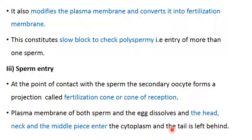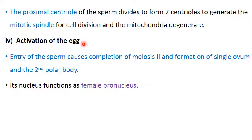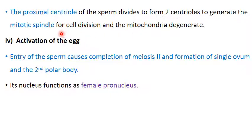In the neck of the sperm we have the distal centriole and the proximal centriole. The distal centriole forms the axial filament and is left behind with the tail. The proximal centriole, when it enters the egg, divides to form two centrioles and forms the mitotic spindle for cell division. The middle piece contains mitochondria that degenerate after entry. Therefore, the mitochondria present in the zygote will be maternal in origin.